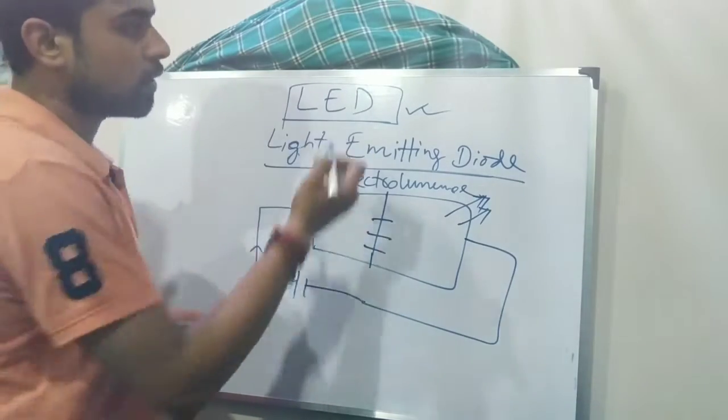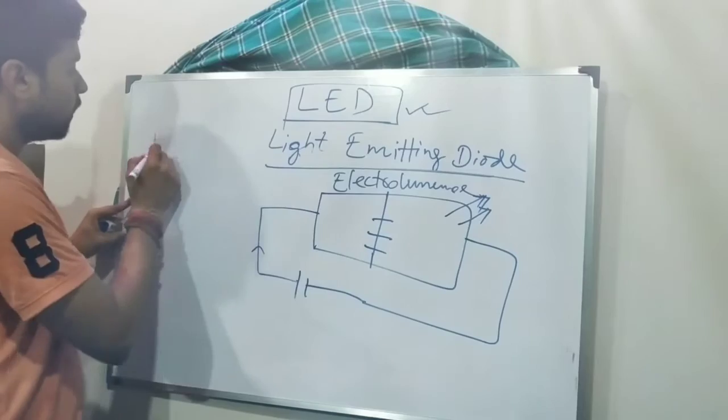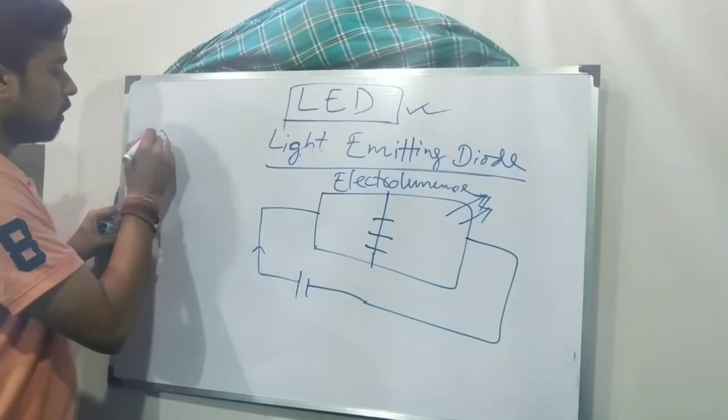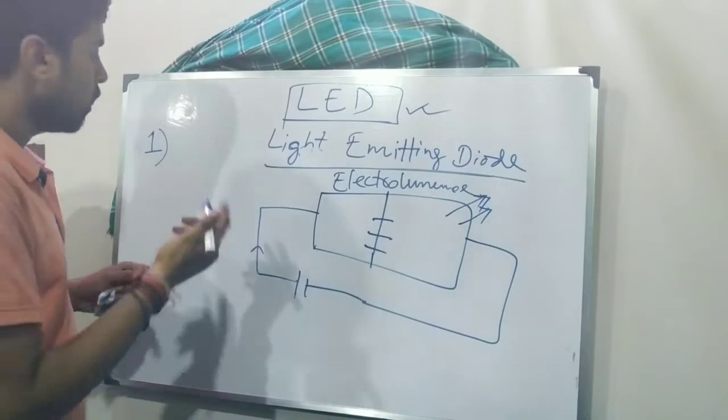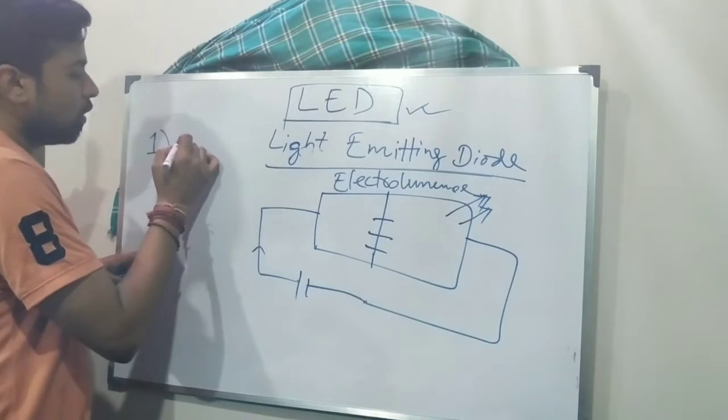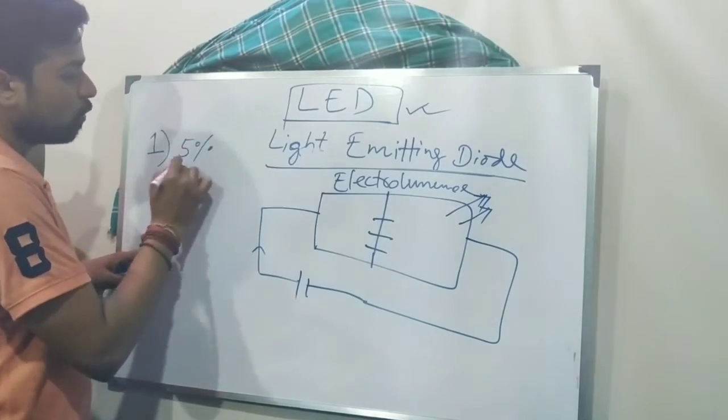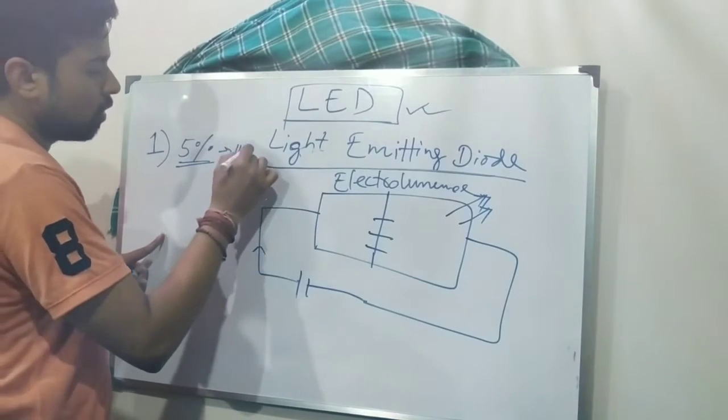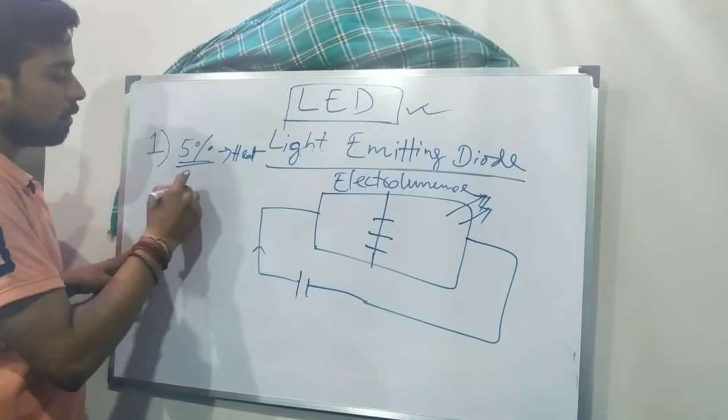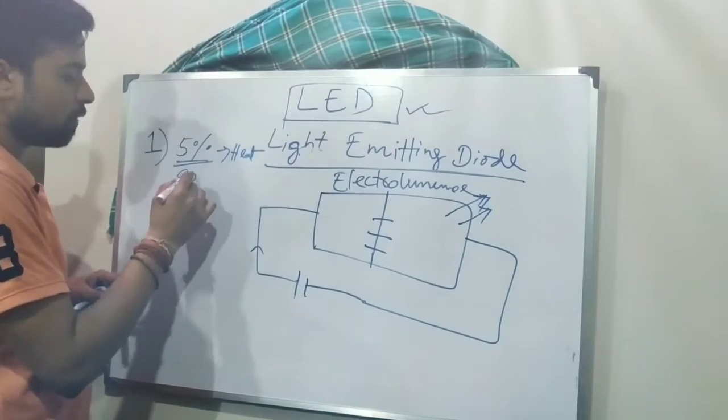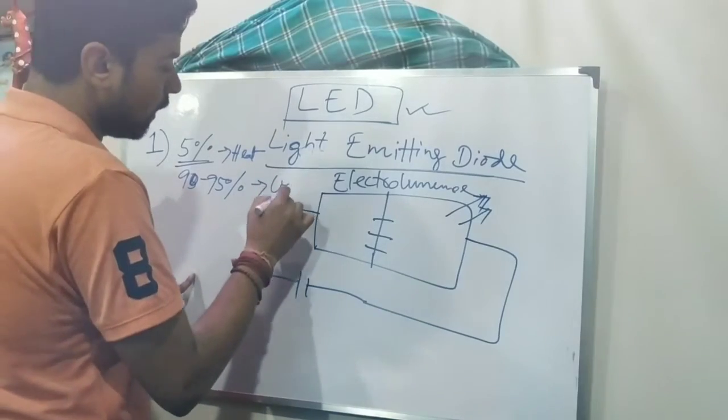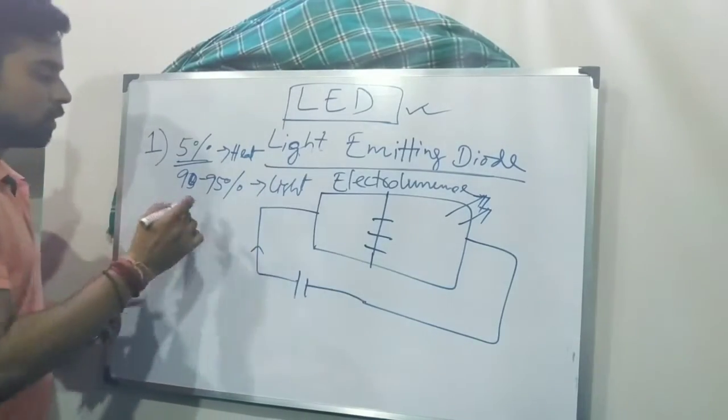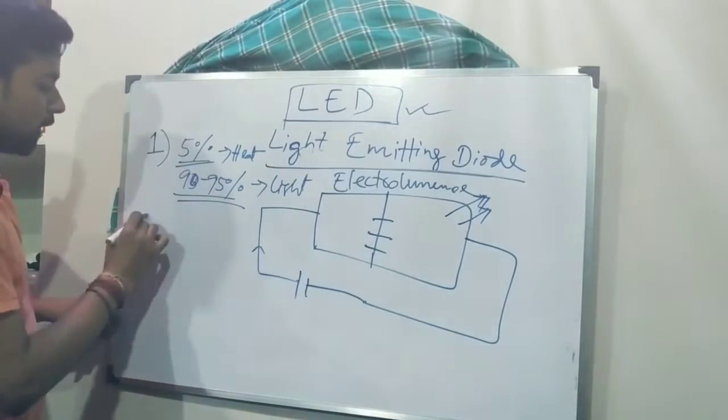So what are the advantages of using this LED? First of all, the energy efficiency. The amount of energy or the voltage we will provide, only 5% is getting wasted in heat. In case of this, more than 90% or 95%, 90 to 95% of energy is converted into light. So thus, it's very effective.